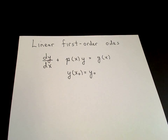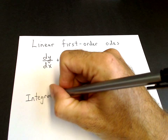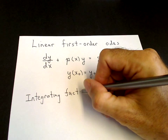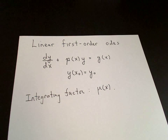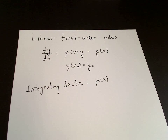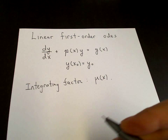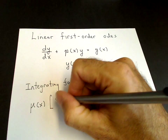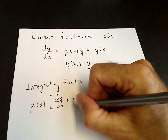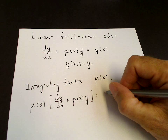To find that solution we introduce an integrating factor, which we call μ(x). The idea of the integrating factor is that when we multiply both sides of the differential equation by μ(x), we obtain an equation that can be integrated. So we multiply both sides: μ(x) times dy/dx plus p(x)·y equals μ(x) times the right-hand side.